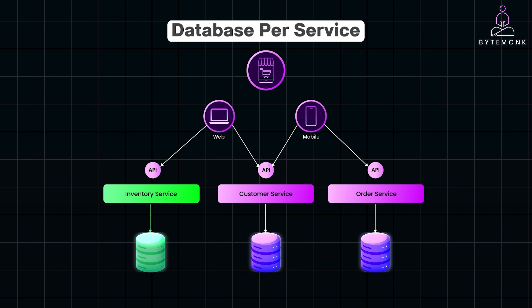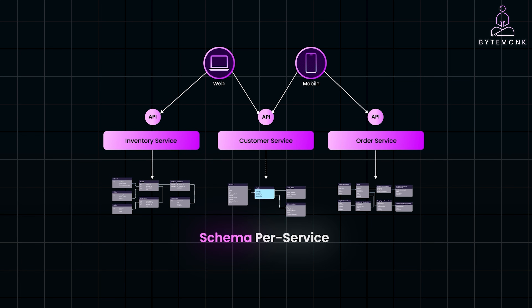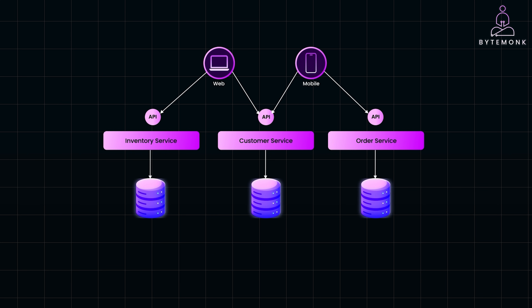There are several ways to implement this pattern and keep a service's persistent database private. In the private tables per service pattern, each microservice gets its exclusive set of tables in a shared database, but those tables aren't accessible to the other services. In schema per service, each service has its own database schema — multiple schemas can exist in the same database but are isolated from one another. And in the database server per service pattern, each service has its own database server entirely separate from others. Regardless of which option you choose, the services communicate through APIs, not through direct database access, keeping the system loosely coupled.